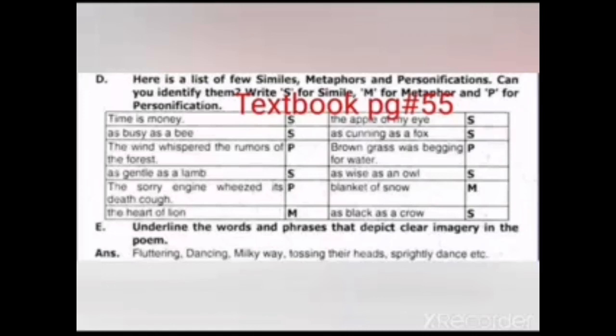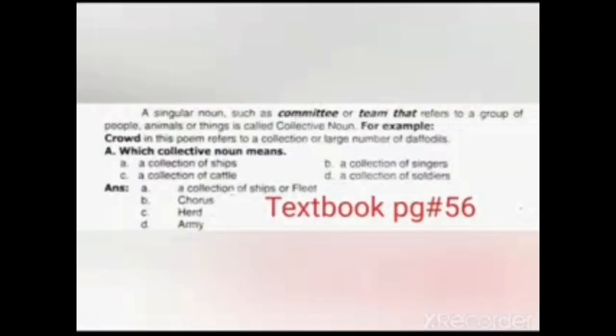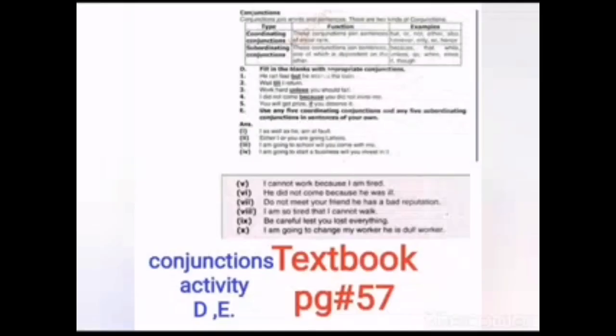On page number 56 of your textbook there is an activity related to the collective nouns that we have read earlier. And at page number 57 of your textbook there is activity D and activity E related to the conjunctions. So you can have a recap of all the lesson that we have done and you will be able to solve the exercise there.